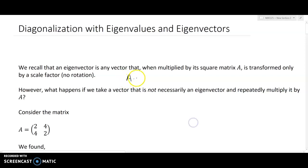So we know that if you take an eigenvector and you multiply it by its matrix, what comes out is the eigenvector scaled by a constant, which we just call its eigenvalue. However, what happens if we take a vector that is not necessarily an eigenvector and repeatedly multiply it by A?